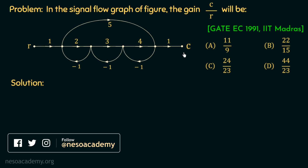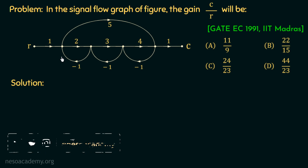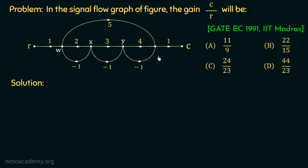In order to find out the gain C over R, we need to apply Mason's gain formula in this signal flow graph. For simplicity, let us name these nodes as W, X, Y, and Z.